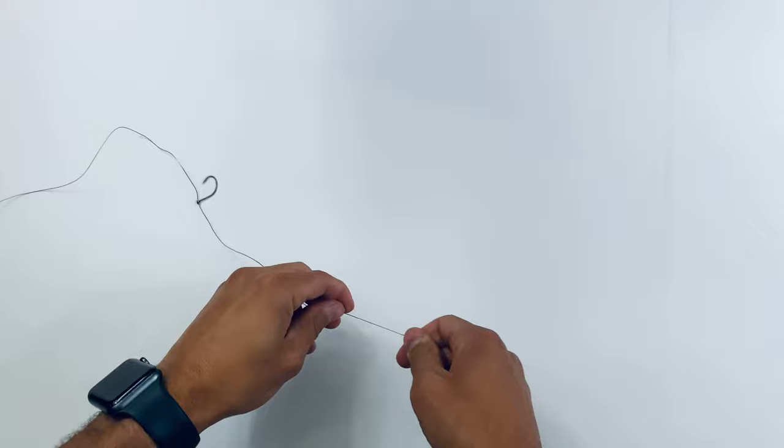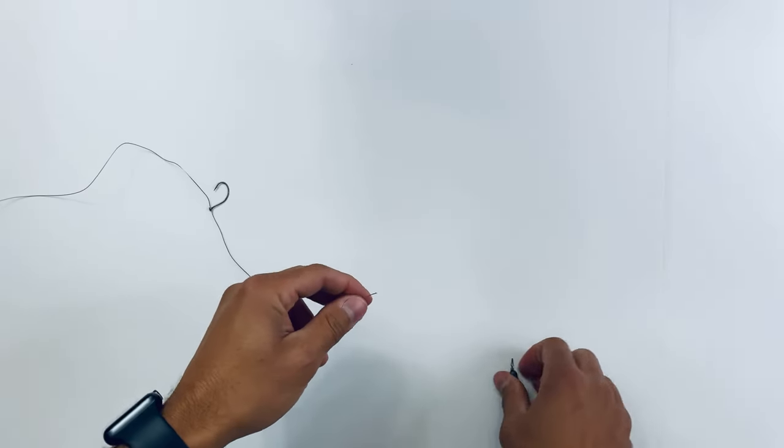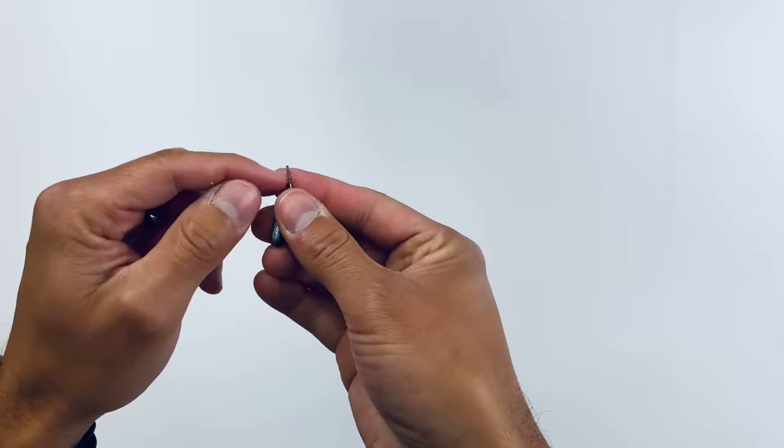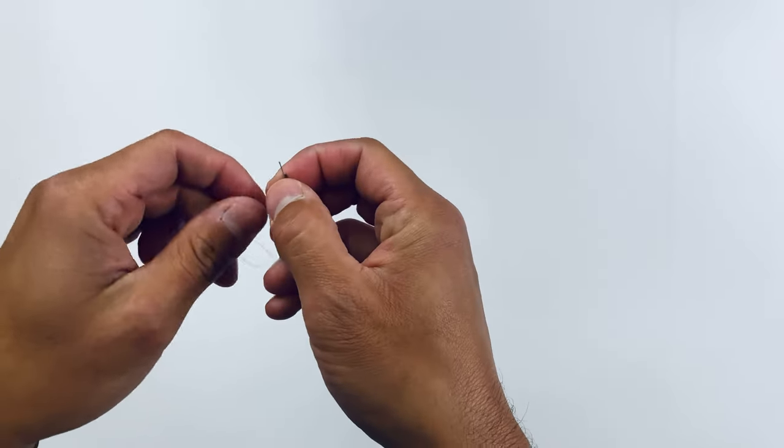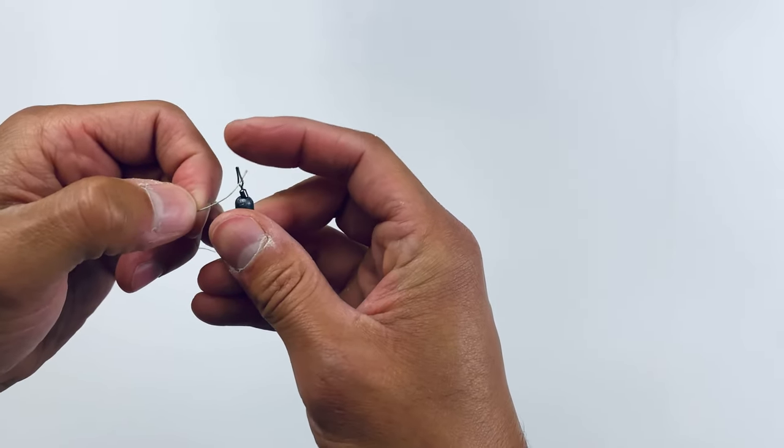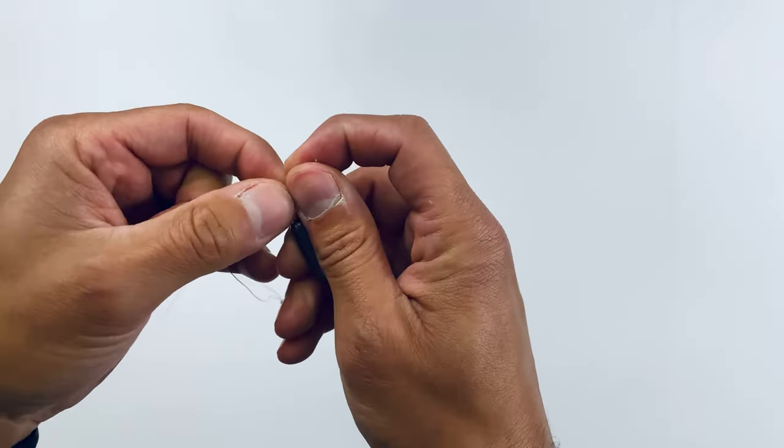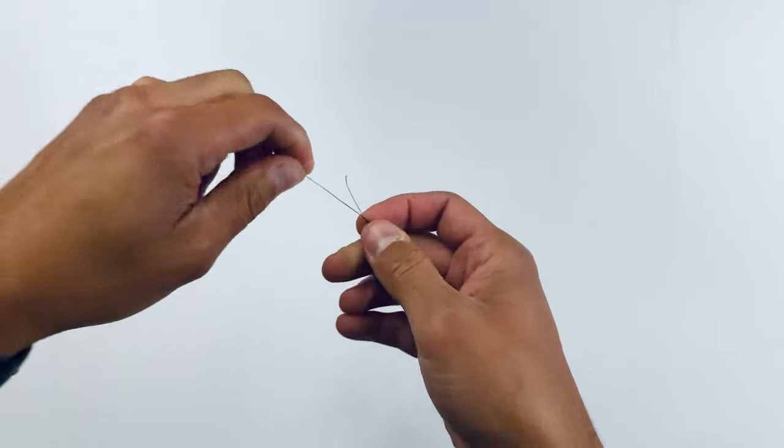And the last thing you will need is a drop shot weight. And here with the drop shot weight, you will see it has a V connector. So simply, all you're going to do here is put it up, put it in that little hole and slide it up. And that is that.